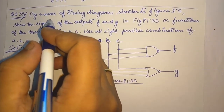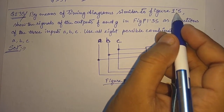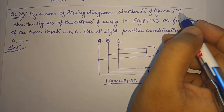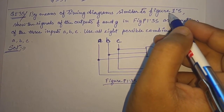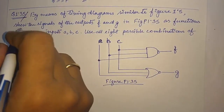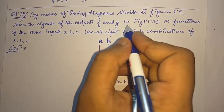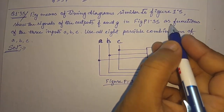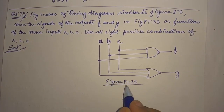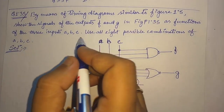The problem is: by means of a timing diagram, similar to figure 1.5 — if you see figure 1.5 in the book, you will see how the timing diagrams are drawn — show that the signal outputs f and g in figure 1.35, as functions of the three inputs.